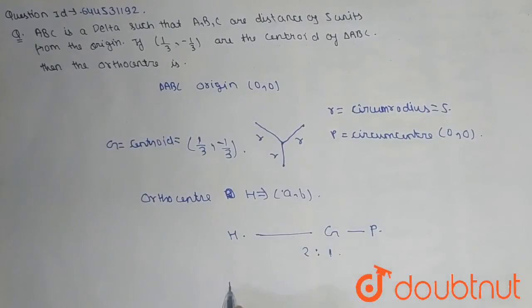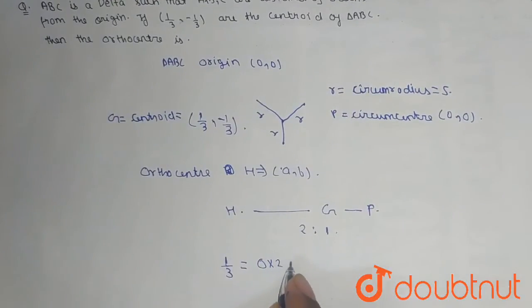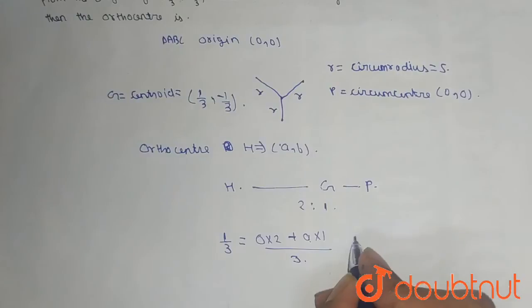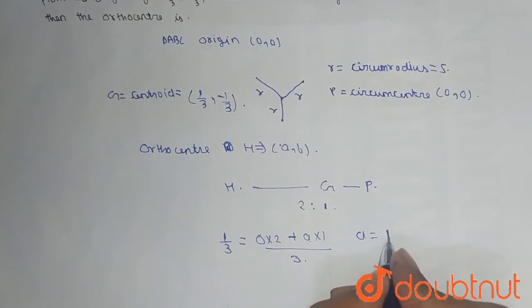So 1/3 is equal to (0 × 2 + A × 1) divided by (2 + 1), which equals 3. So from here we will get A is equal to 1.